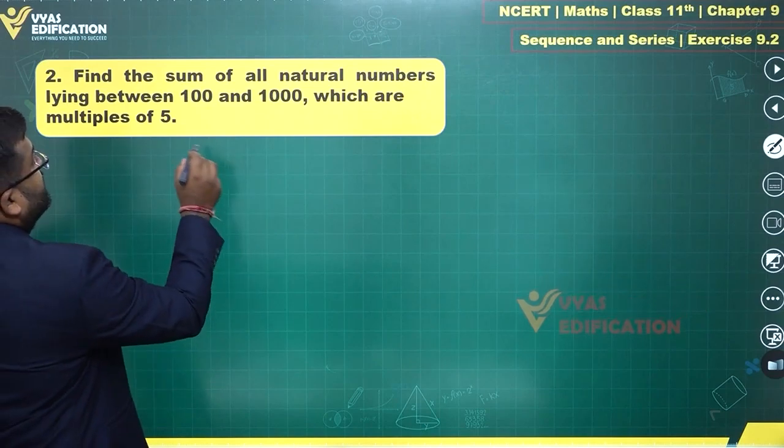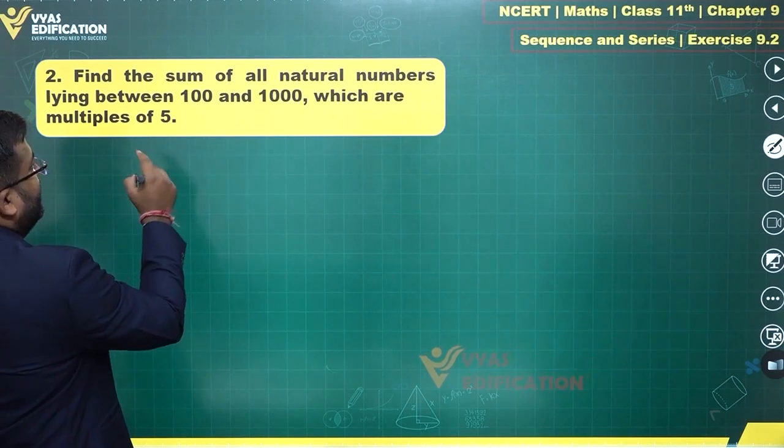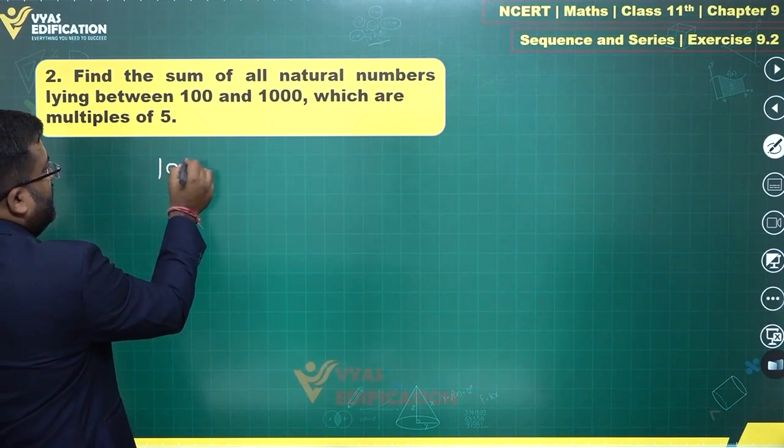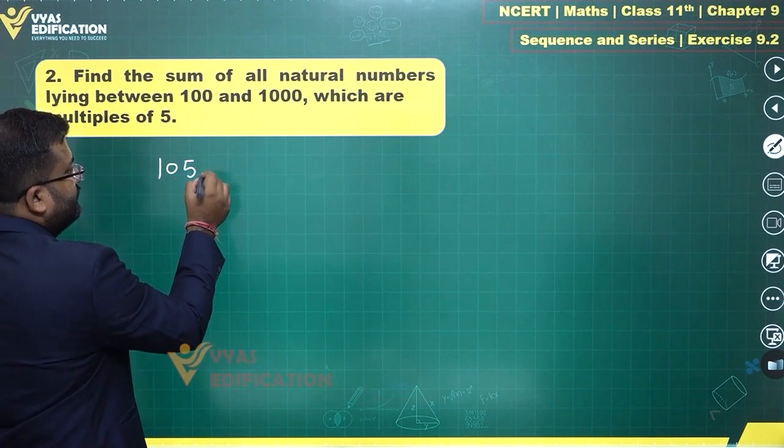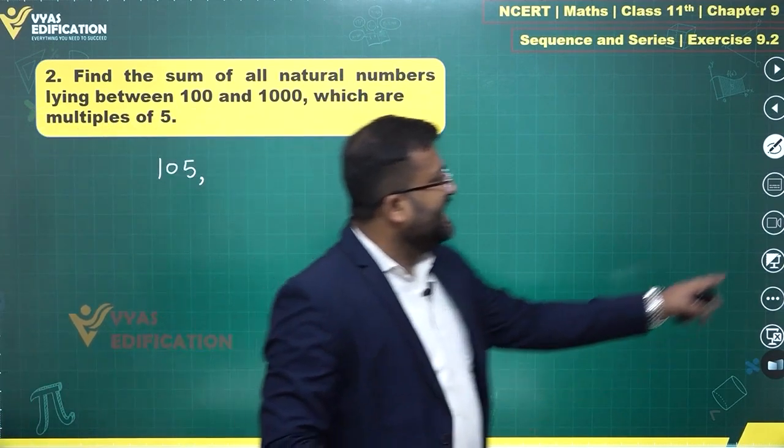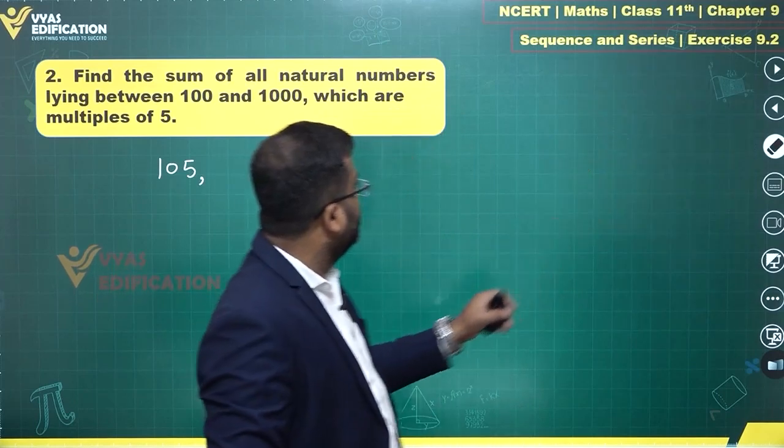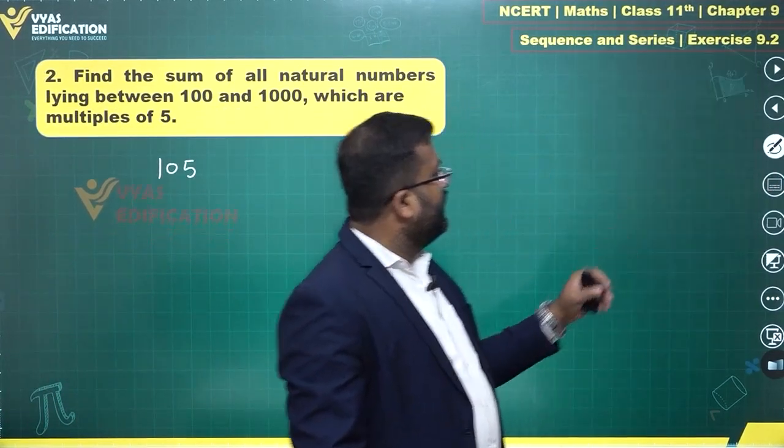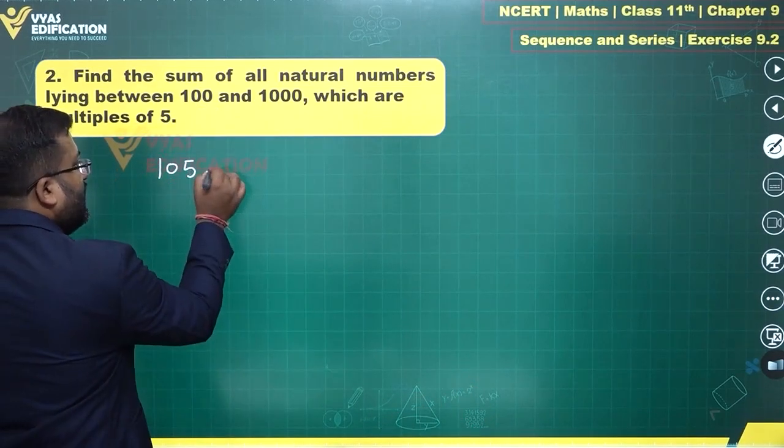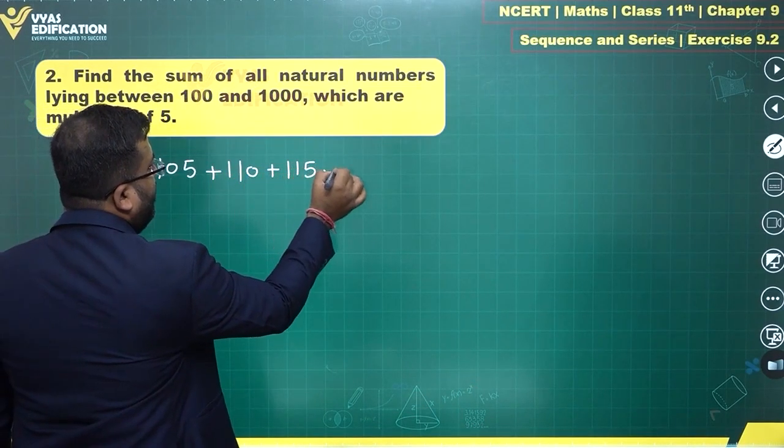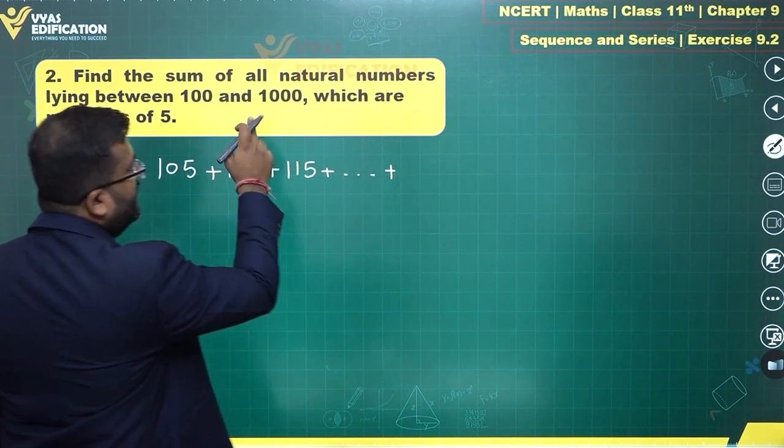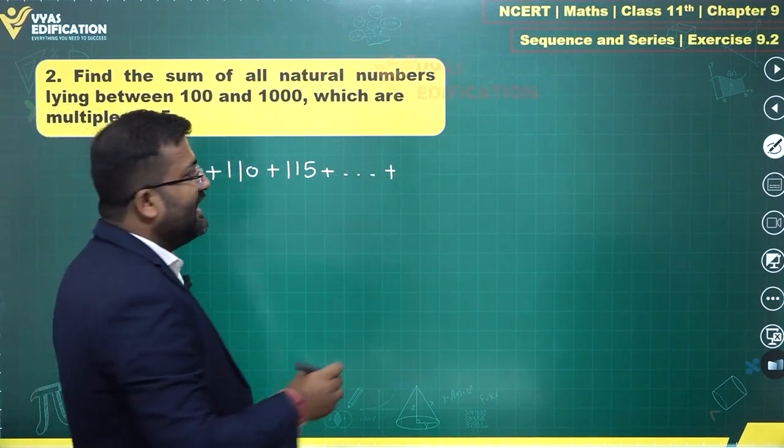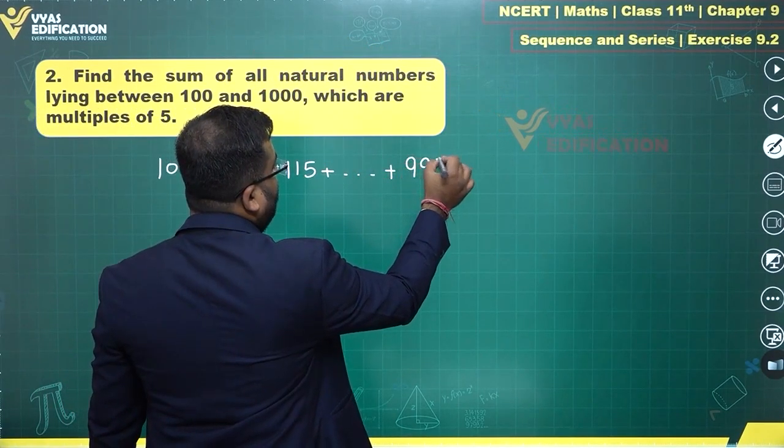So what do we need? Sum of all natural numbers lying between 100 and 1000 which are multiples of 5. We need 105. For the sum let us write the series directly. The next term of this series will be 110, then you will have 115 and correspondingly continuing further. Just before 1000 you get 995.